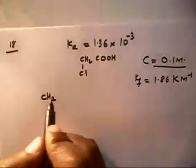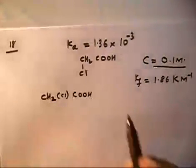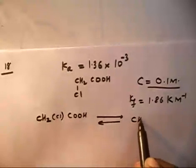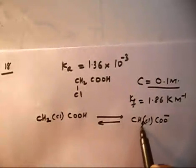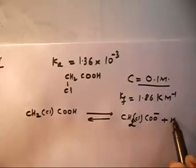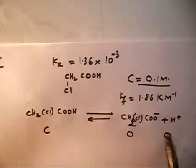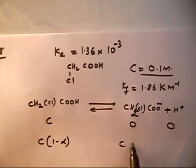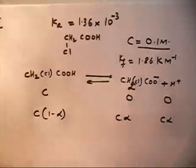CH₂Cl-COOH dissociates to give CH₂Cl-COO⁻ plus H⁺. The initial concentration is C, 0, 0. After some time the concentrations are C(1−α), Cα, and Cα respectively.